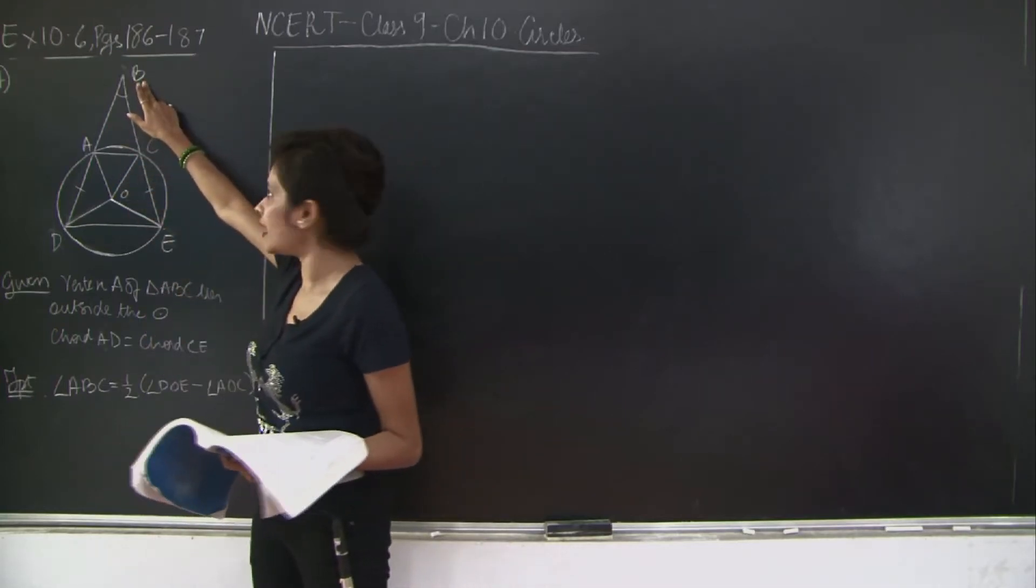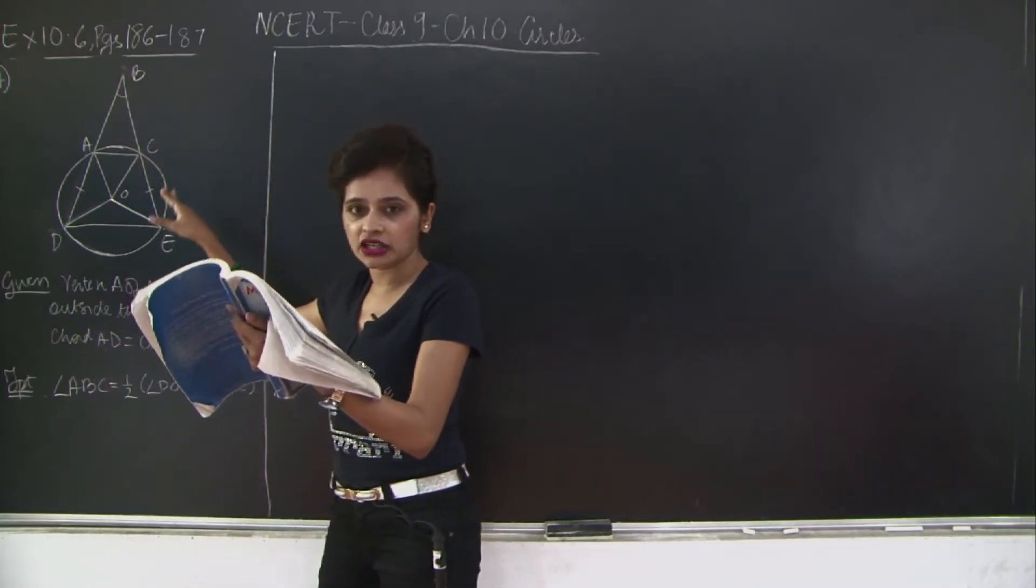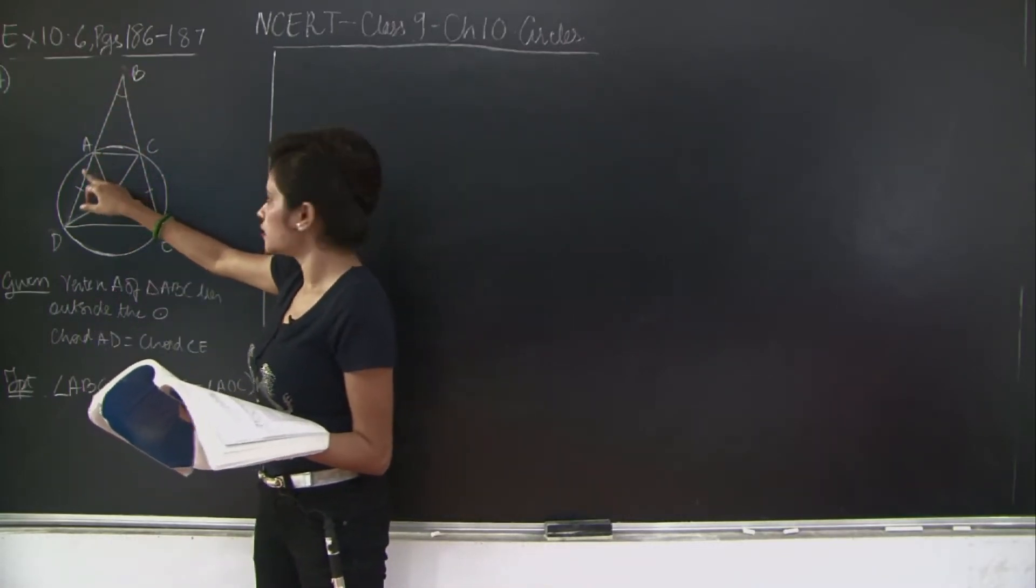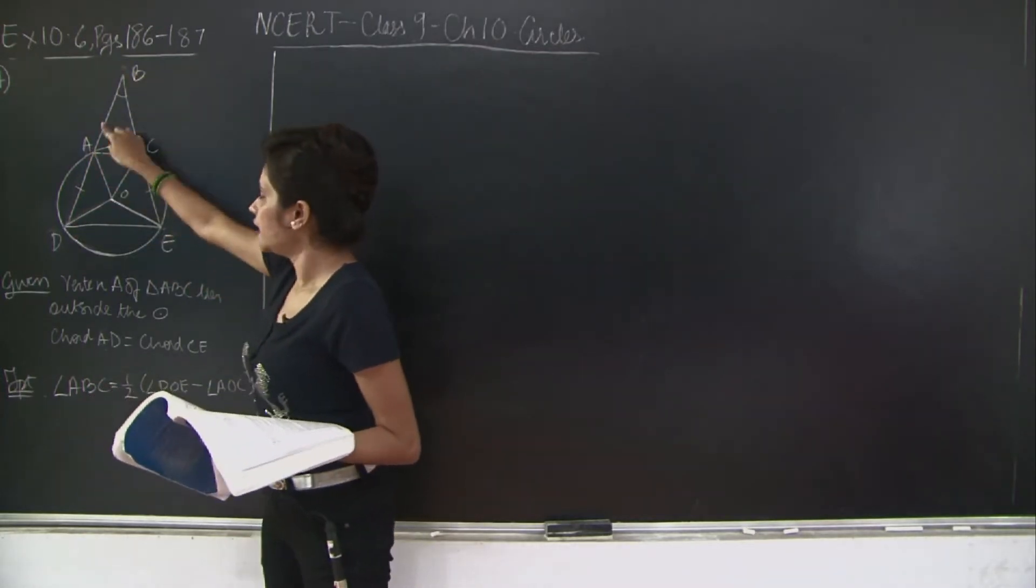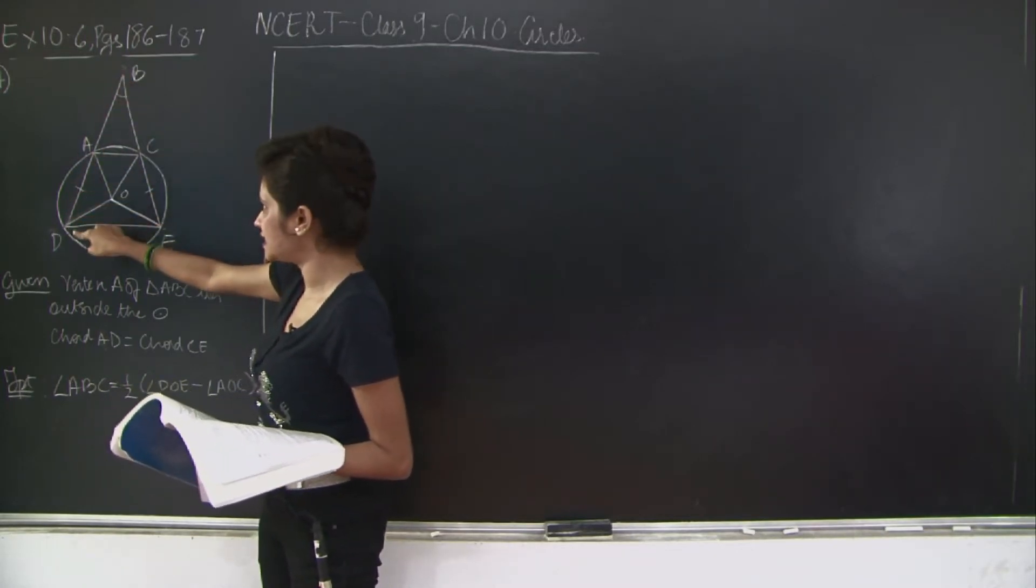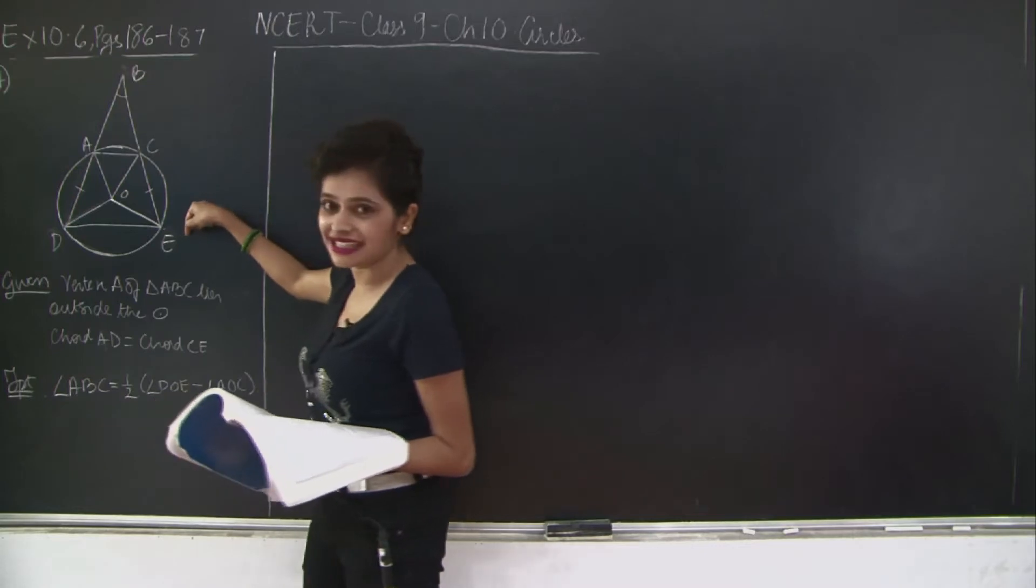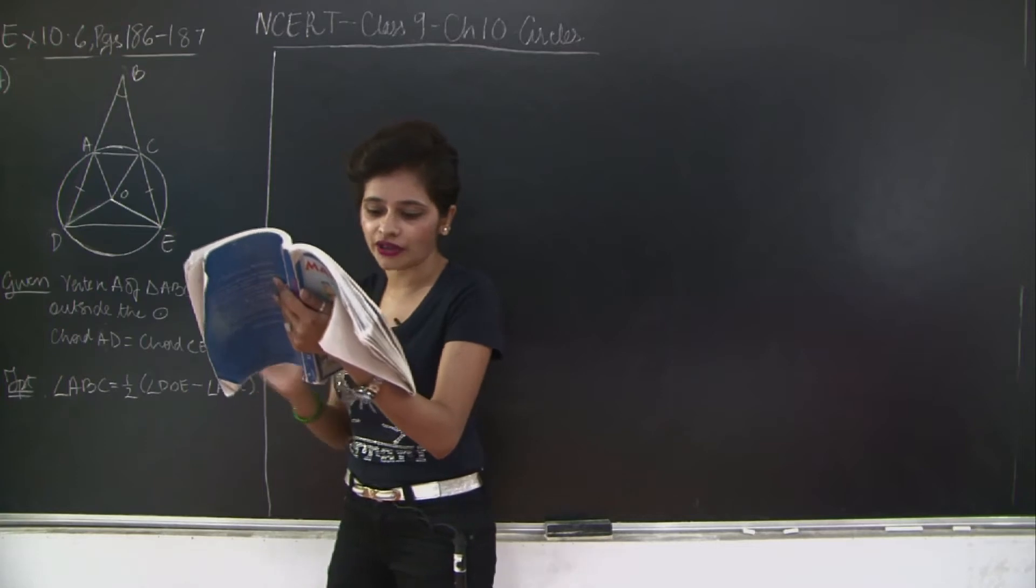So the sides of this angle are BA and BC. They are intersecting the circle at equal chords. So the equal chords are AD and CE. So I have BA's extension to AD. So it is BAD and you have BCE lying on the same line, and the chords AD and CE equal to each other.